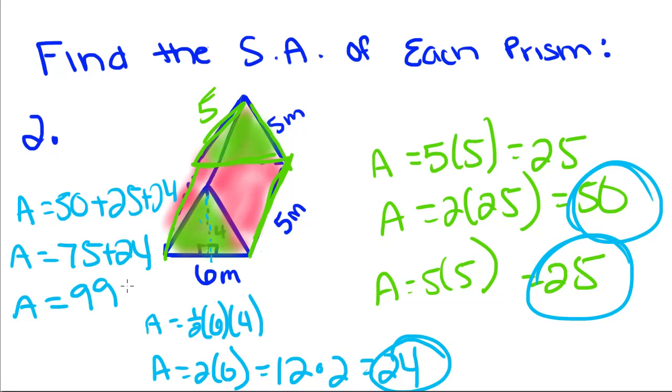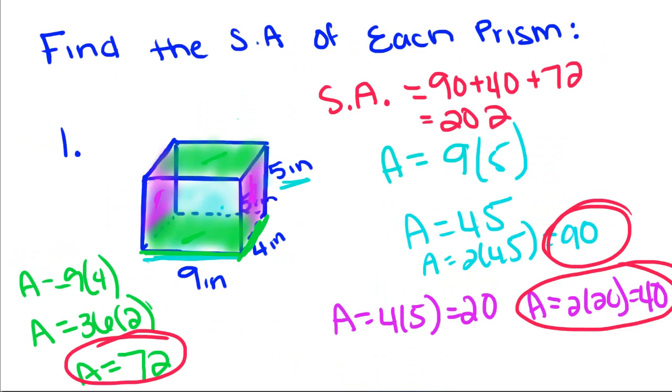So our surface area is 99 meters squared. Now, even though this is a three-dimensional object, we're still in meters squared because we just want the surface area. If we were finding volume, then we'd be in meters cubed. So I just remembered that we left units off of this one, so we're just going to go back and add our units real quick. So where was our final answer? Right here. So it should have been 202 inches squared.